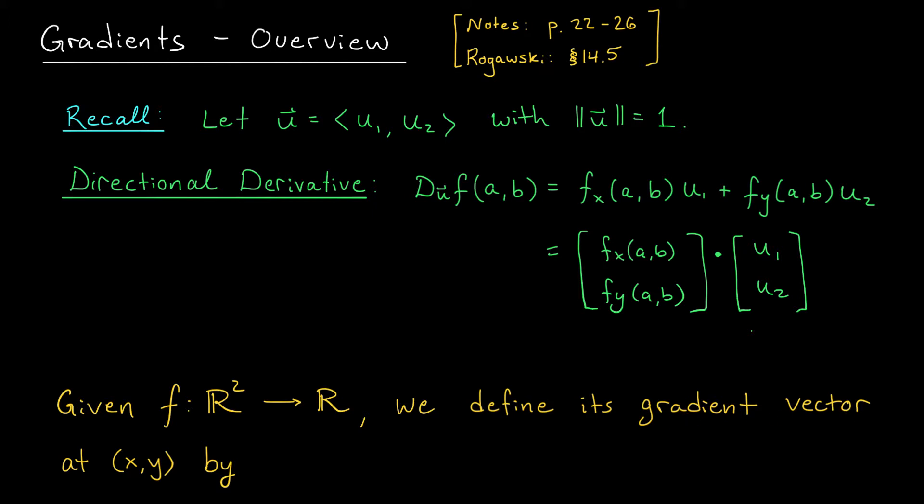So specifically, if I have a function f from R² to R, we are going to define its gradient vector, evaluated at the point (x,y), by this symbol. This upside down triangle, nabla f or del f at (x,y), and it's the vector of partial derivatives, fx(x,y), fy(x,y).